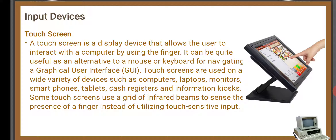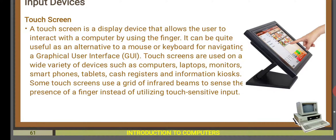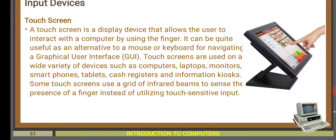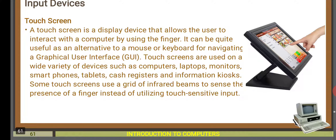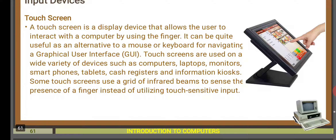The next input device is the touch screen. A touch screen is a display device that allows the user to interact with the computer using a finger. By touching with your finger, you can change icons or select items. It can be a useful alternative to the mouse or keyboard for navigating a graphical user interface, and is used on a wide variety of devices such as computers, laptops, monitors, smartphones, and tablets.